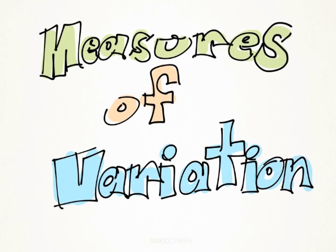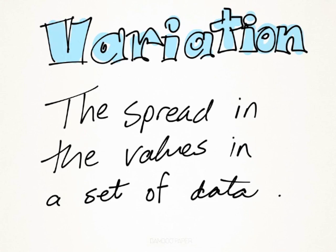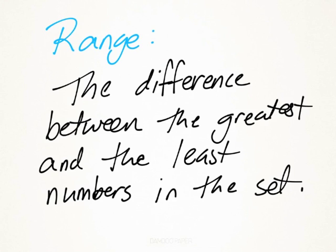This lesson is on measures of variation. Variation refers to the spread of values in a set of data. One term you'll need to be familiar with for this lesson is range, and that's the difference between the greatest and the least numbers in the set.